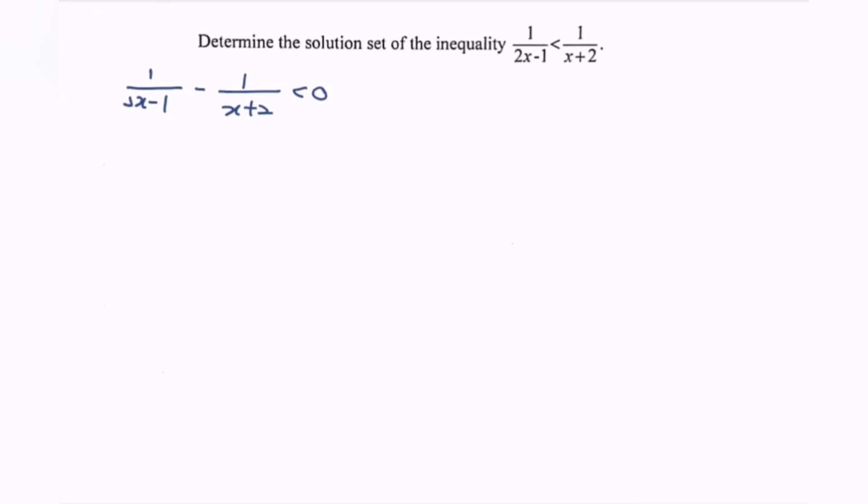The following step is to equate the denominator. So we have x plus 2 minus 2x minus 1 over 2x minus 1 multiplied with x plus 2.